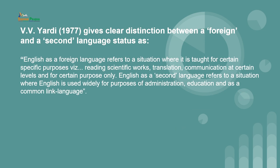Let us look at the words of V.V. Yadi in 1977. He gave a clear distinction between a foreign language and second language. He said that English as a foreign language refers to a situation where it is taught for certain specific purposes — reading scientific works, translation, communication at certain levels for certain purposes only. It is not considered a native language because it is a non-Indian language as stated by the government of India.